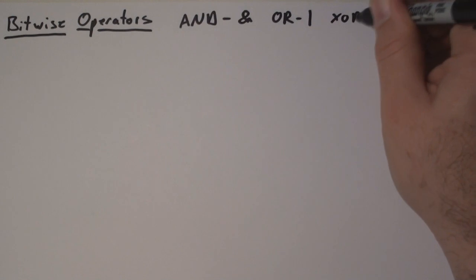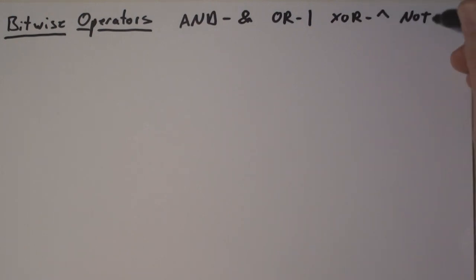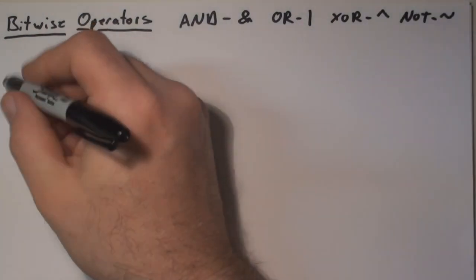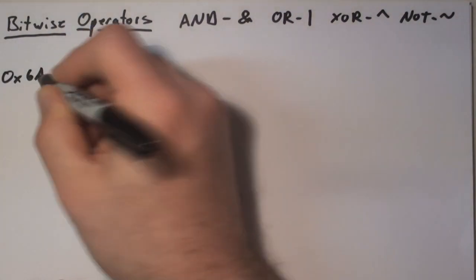AND, which is the single ampersand, OR, which is the pipe character or the bar character, XOR, which is the caret, and NOT, which is the tilde.